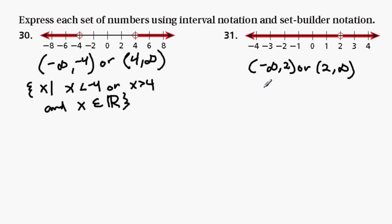And then for set builder notation, we would go like this. The set of all numbers x such that x does not equal 2. And x is an element or a member of the set of real numbers. Done.